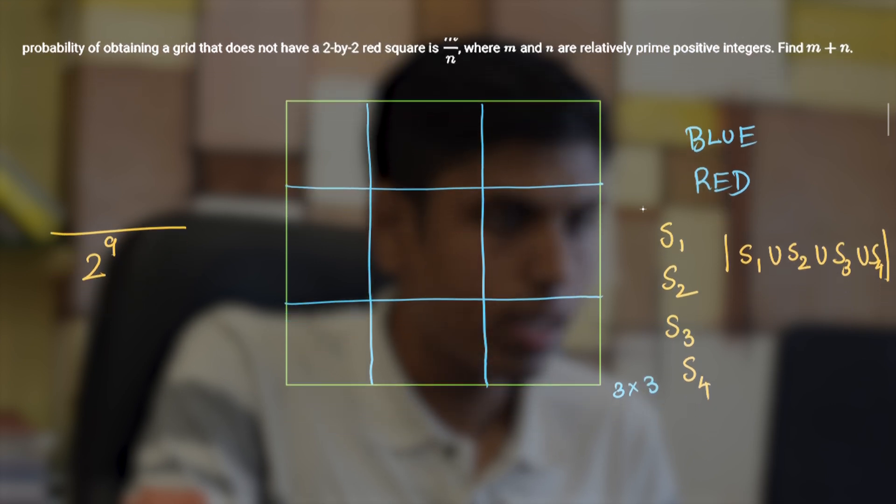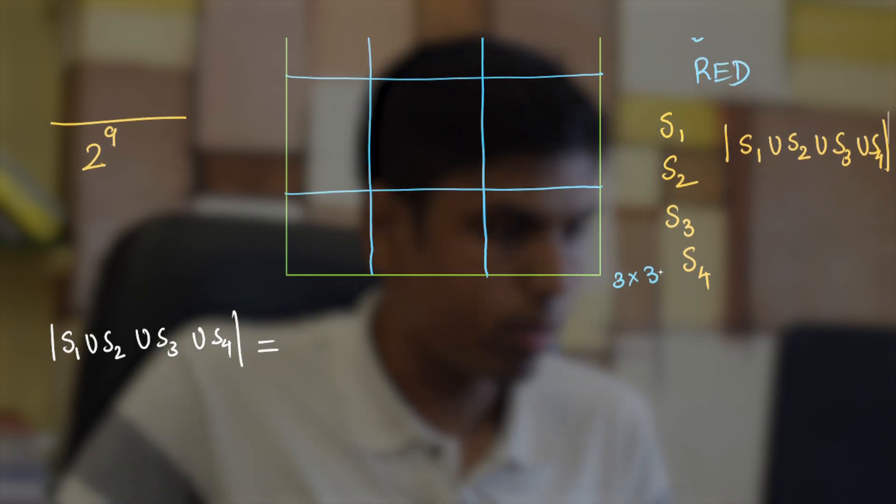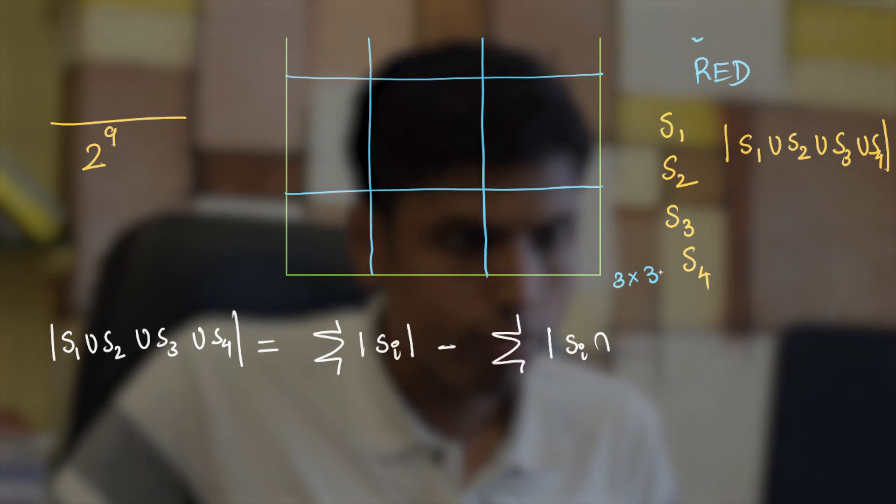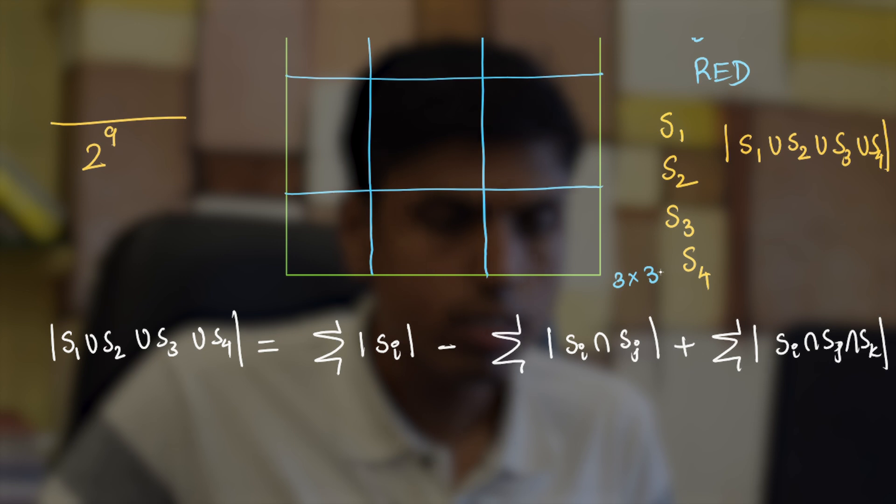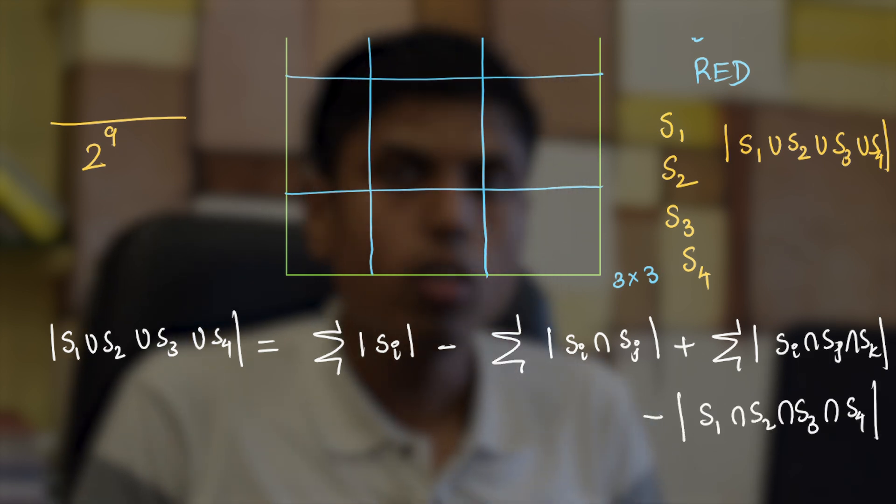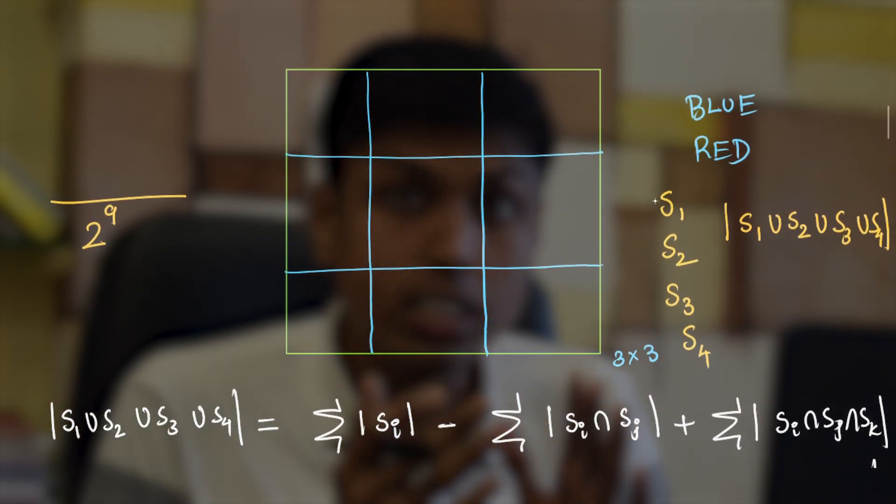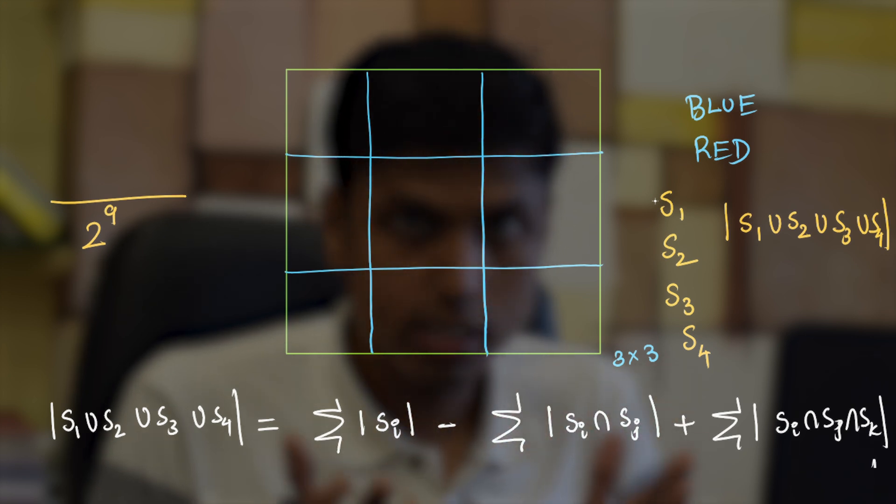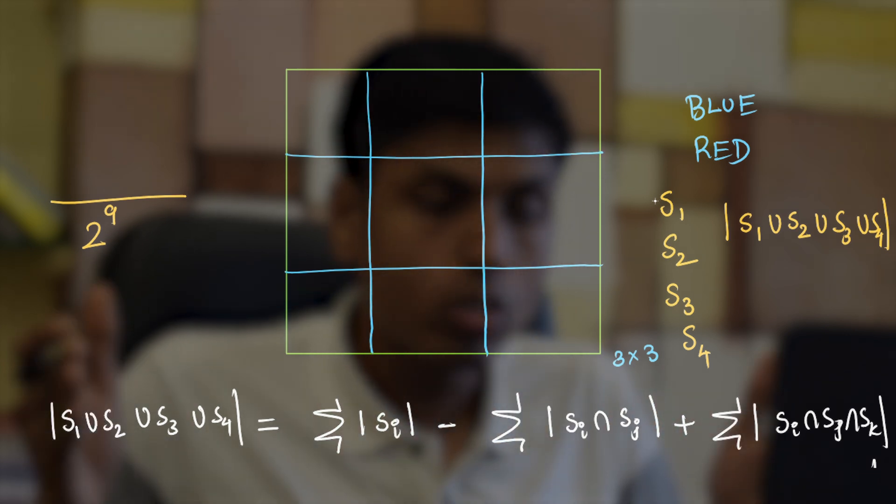We have to apply the inclusion exclusion principle, so here the cardinality of the union by the inclusion exclusion principle would be the sum of individual cardinalities minus sum of the two intersection cardinalities plus the sum of three intersection cardinalities minus the cardinality of all four 2 by 2 squares being red. Notice that these four 2 by 2 squares are symmetric so we can just find the cardinality of let's say S1 intersection S2 and that is identical to all possible two intersections taken at a time.